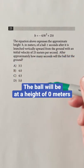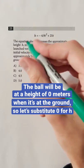The ball will be at a height of 0 meters when it's at the ground, so let's substitute 0 for h and solve for t.